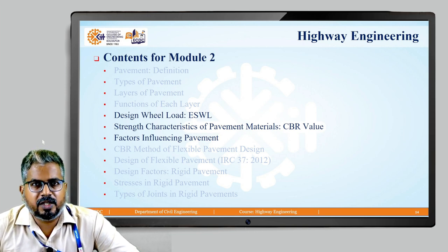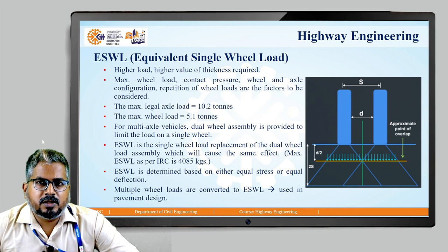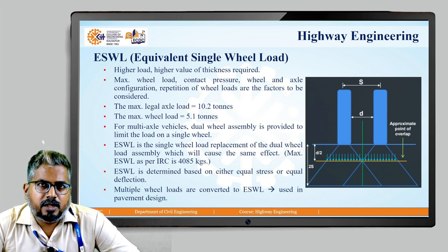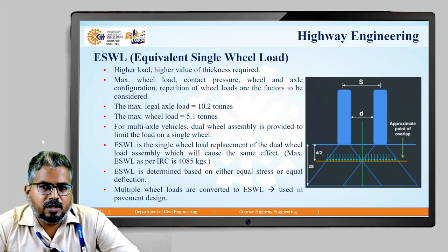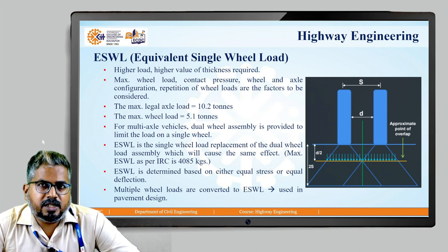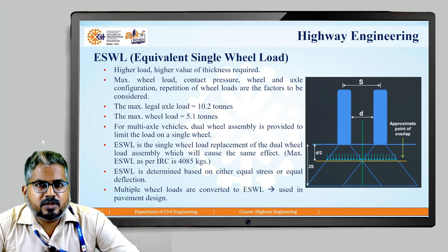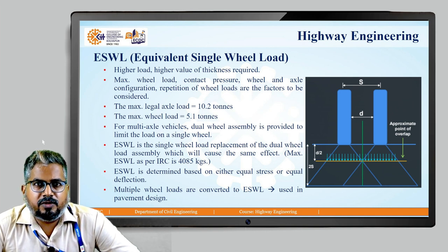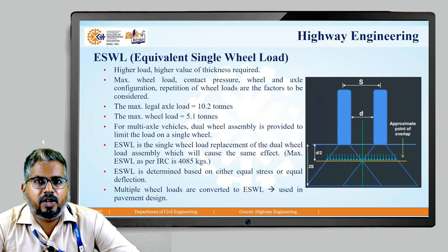These are the topics I will be covering as part of Module 2. Before going into the concept of ESWL, we will look into various conditions. Whenever there is a higher load on the road, in order to handle it, it is very important to provide a greater thickness for the layers of the pavement. The factors we have to consider are: the maximum wheel load, the contact pressure, wheel and axle configuration, and the repetition of wheel loads. These are some factors required to be considered while calculating the ESWL.